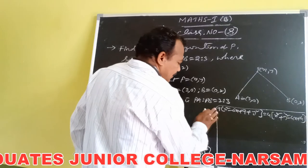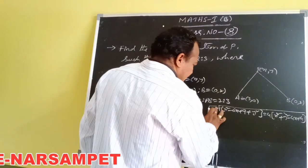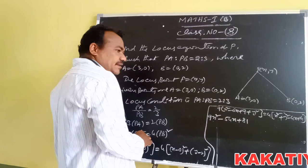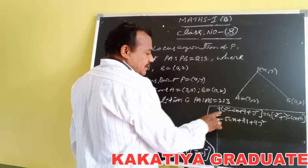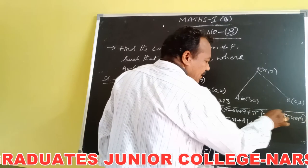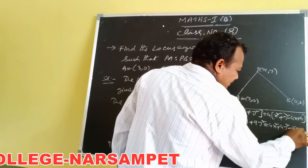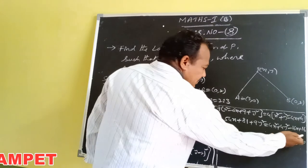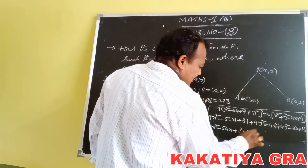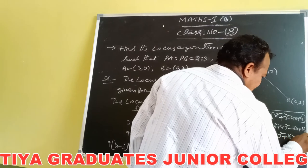Multiplying these terms with 9: 9X squared minus 54X plus 81 plus 9Y squared. Similarly, multiplying the right-hand side terms with 4: 4X squared plus 4Y squared minus 16X plus 16. Bringing all terms to one side: 9X squared minus 54X plus 81 plus 9Y squared minus 4X squared minus 4Y squared plus 16X minus 16 equals 0.